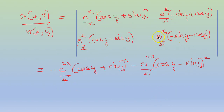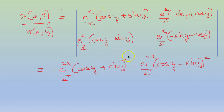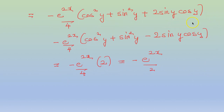Expanding, you get e raised to x times e raised to x, that is e raised to 2x by 4 times (cos y plus sin y) the whole squared. Because you get (cos y plus sin y) times (minus sin y plus cos y), so the minus sin comes outside. Minus e raised to 2x by 4, which is (cos y minus sin y) the whole squared. Expanding: (cos squared y plus sin squared y plus 2 sin y cos y) and (cos squared y plus sin squared y minus 2 sin y cos y). The 2 sin y cos y terms cancel, and cos squared y plus sin squared y equals 1. So you get minus e raised to 2x by 4 times 1 plus 1, that is 2, giving minus e raised to 2x by 2.